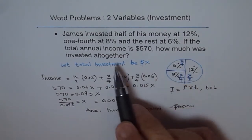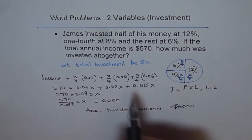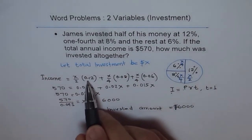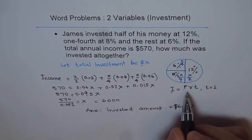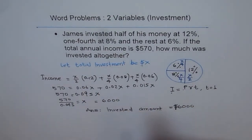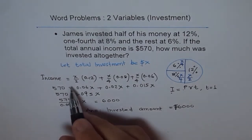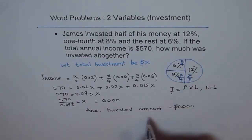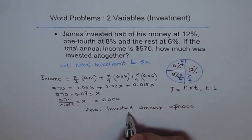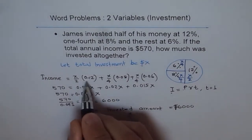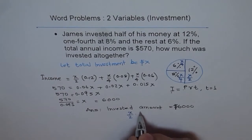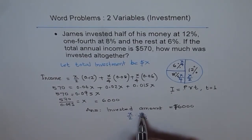When we say interest is principal times rate times time, and we know time is one since it was one year. The rate, as I said here, how did I get 0.12? Rate is 12%, so let me do this calculation here again to show you. It is X over 2 of 12%, that means times 12%, which is 12 over 100. Now 12 over 100 is 0.12.